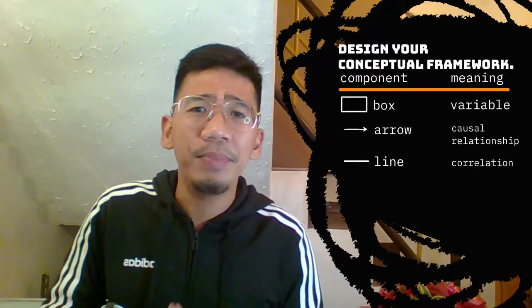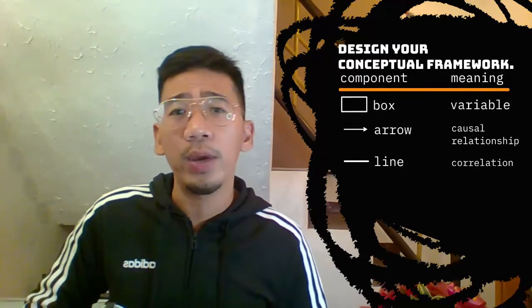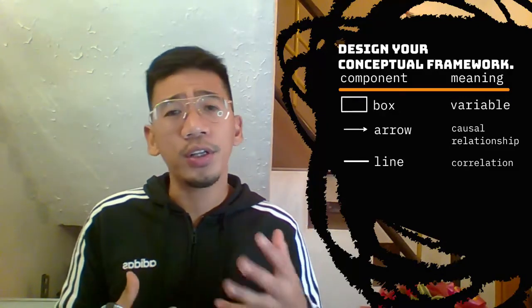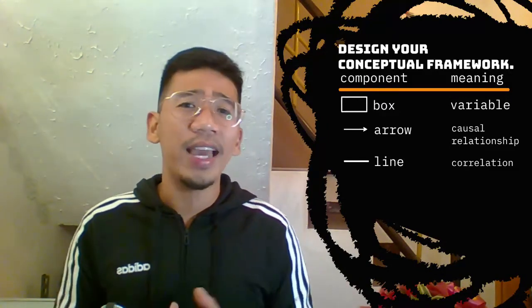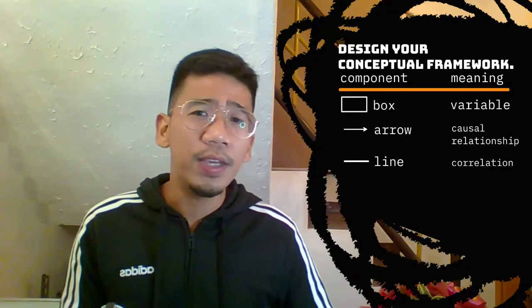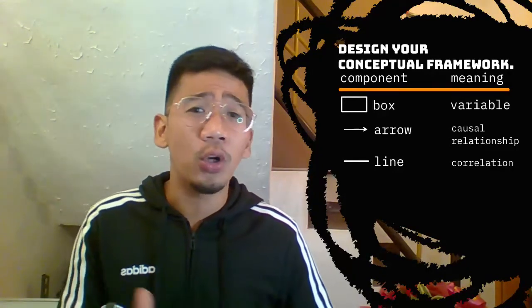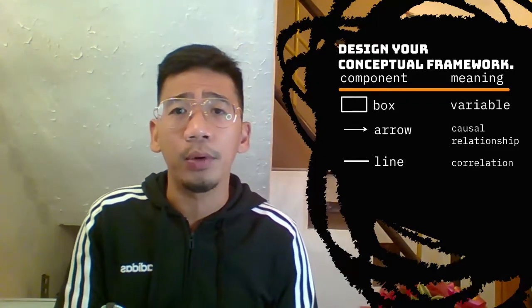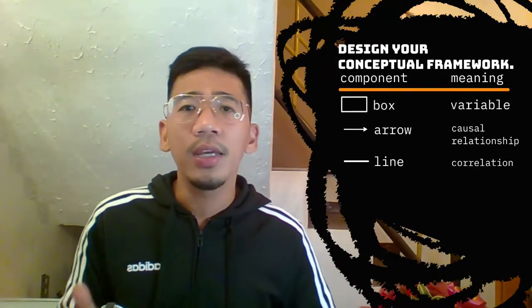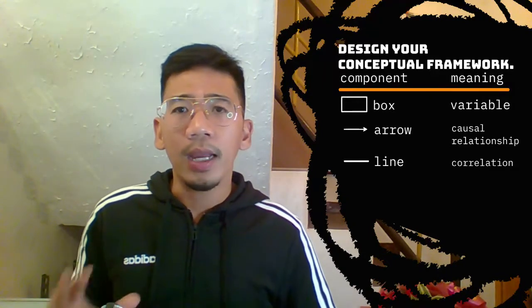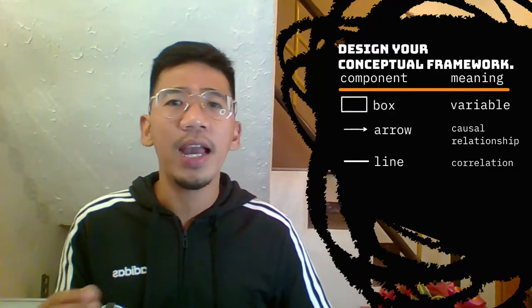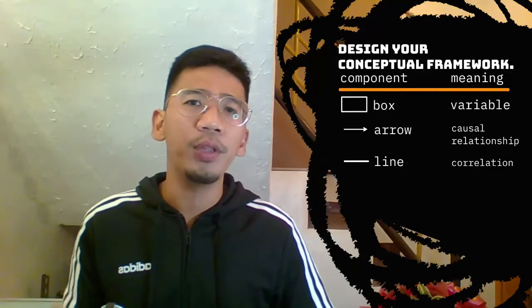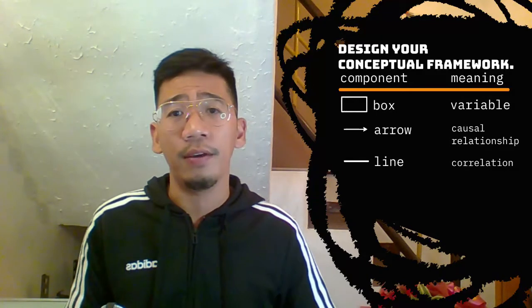A conceptual framework can be designed in many different ways. The form it takes will depend on what kind of relationship you expect to find. To visualize our expected cause and effect relationship, we will use the basic design components of boxes, arrows, and lines. To indicate a causal relationship, each arrow should start from the independent variable, or the cause, and point to the dependent variable, or the effect.